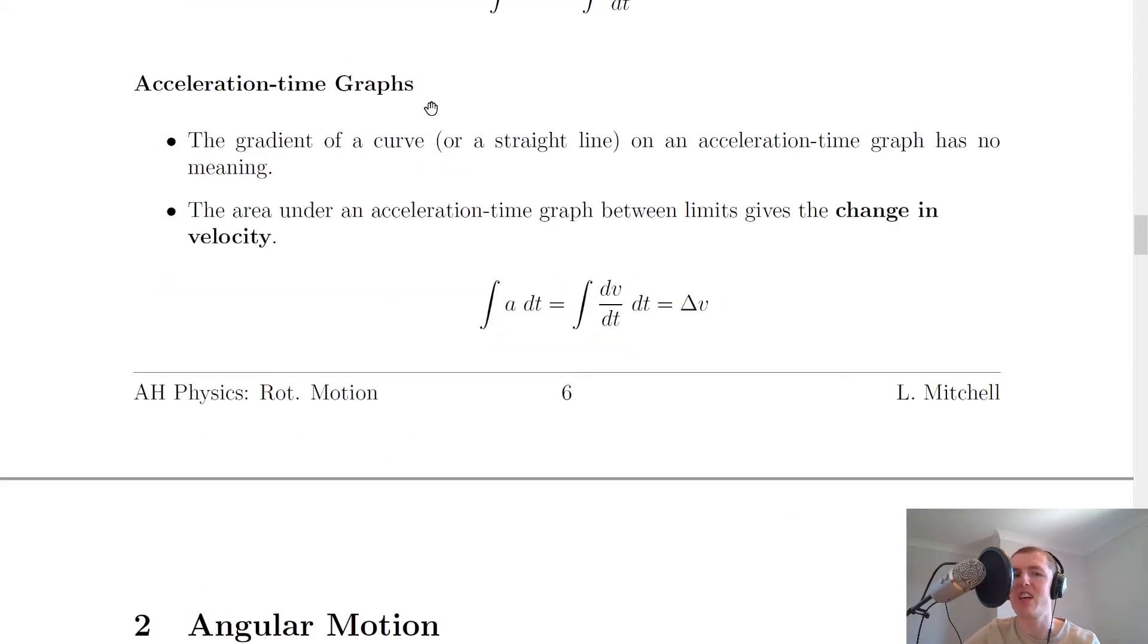And lastly, for acceleration time graphs, it says that the gradient of a curve or a straight line on an acceleration time graph has no meaning. Whereas the area under an acceleration time graph between limits gives the change in velocity. And again, we saw this at National 5 and higher level. So this can be shown with an integration. So the integral of a dt is equal to the integral of dv by dt dt, which is equal to delta v. Or in other words, the integral of the acceleration with respect to time is equal to the change in velocity.